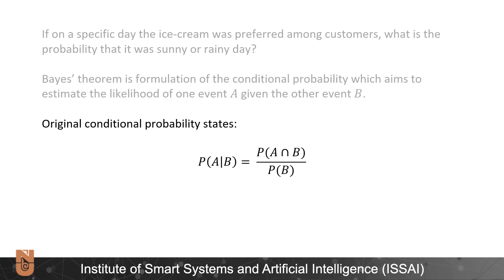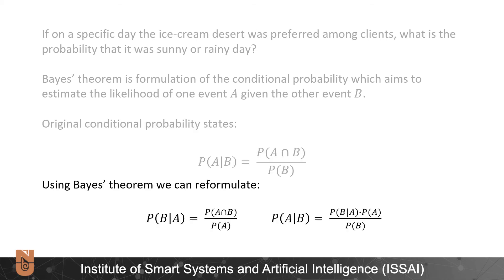The original conditional probability states that probability of event A given B is equal to the probability of A and B over the probability of B. Using Bayes' theorem we can re-formulate conditional probability and get probability of event A given B such as probability of event B given A multiplied by probability of event A over the probability of event B.